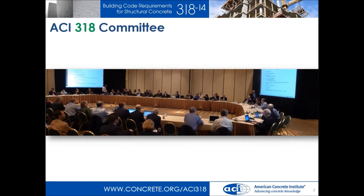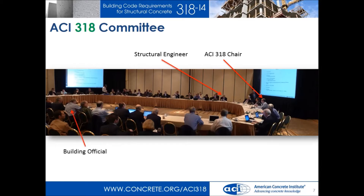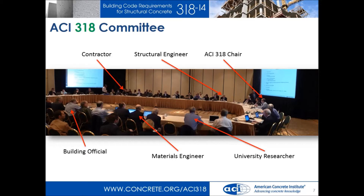I'd like to show you the committee that has put this code together over all these years. This is the current ACI 318 committee. Randy Poston is the current ACI 318 chair. This is a typical meeting we would have — the main committee, plus a series of subcommittees. The people who make up 318 are people like you and me: structural engineers, building code officials, materials engineers, contractors, and university researchers. This group gives breadth to the code so that everyone who is part of the design process has a say in making it.